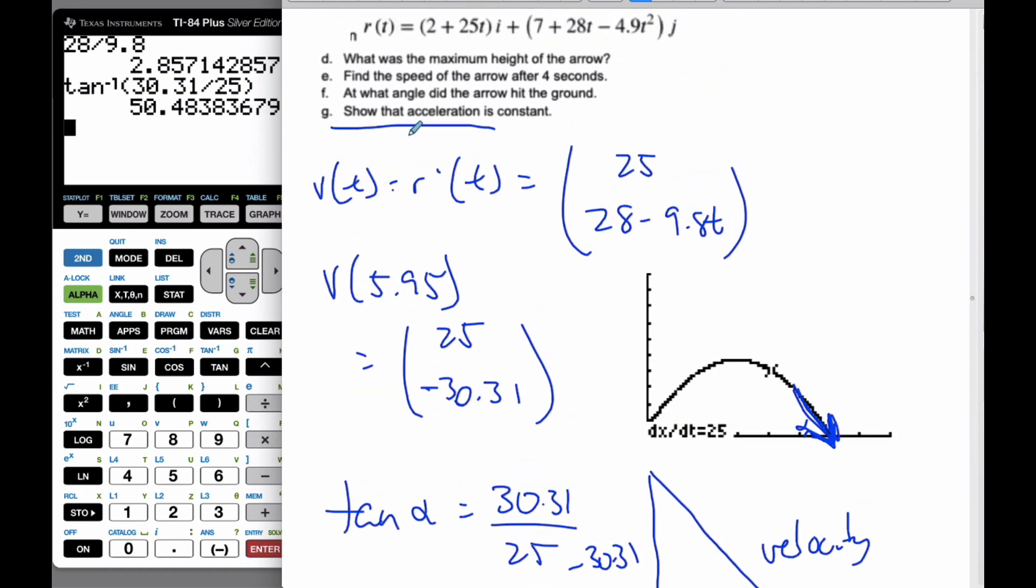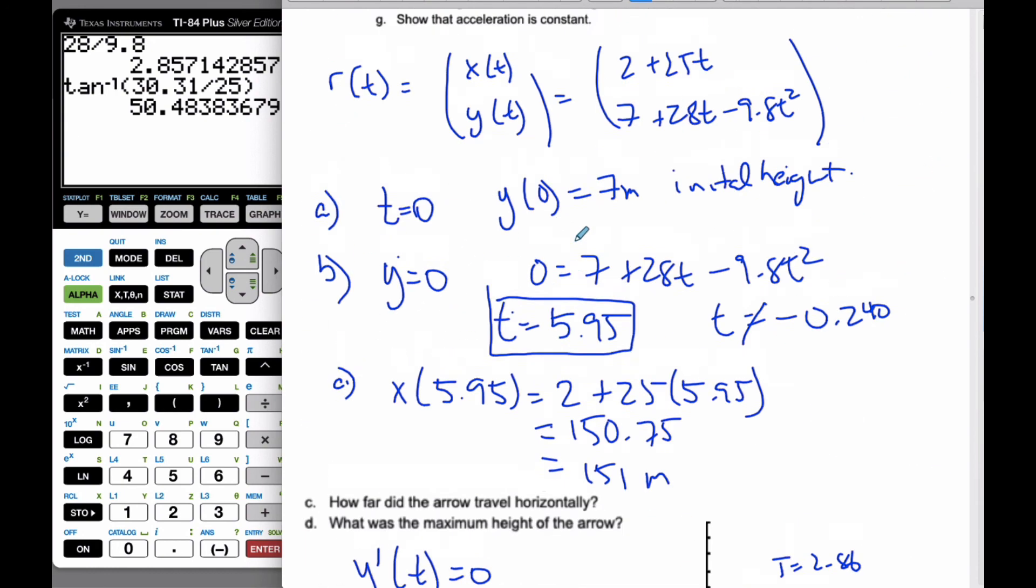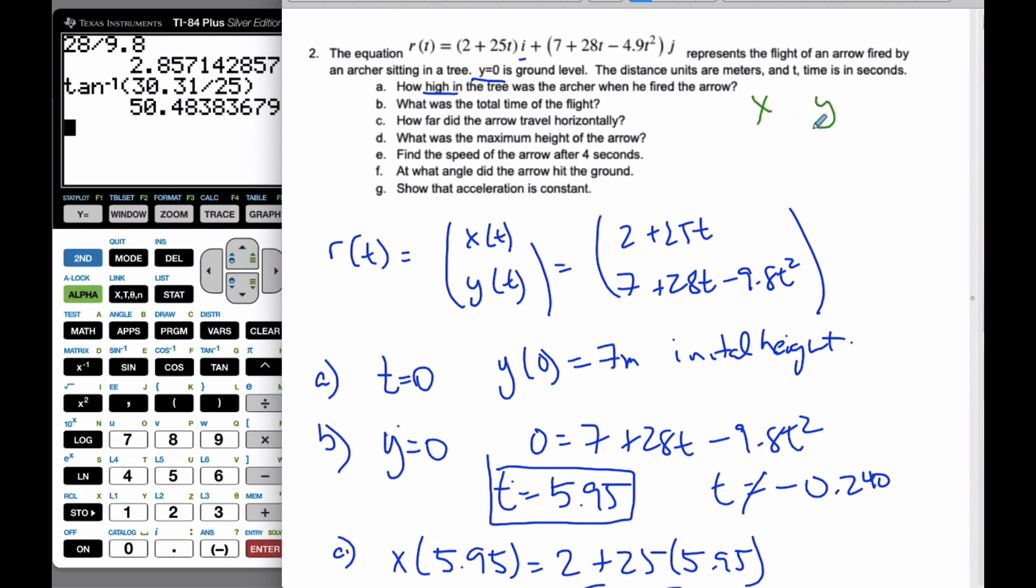Finally, the last thing says show that the acceleration is constant. I'm going to use my velocity curve here, and I know the derivative of the velocity equals the acceleration. When I take the derivative of 25, I get 0. When I take the derivative of this y component, I get -9.8. This is constant, it's not moving. If you recognize this number, that is gravity, meters per second squared. So a lot of components to this problem. You have to think about the x values and the y values, velocity, position, and acceleration all together. Thank you.